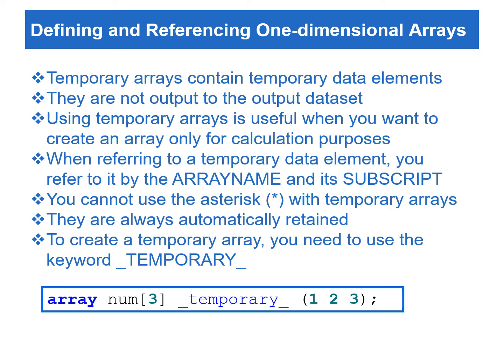We can use the keyword _TEMPORARY_ as array elements to create temporary arrays. Using temporary arrays is useful when you want to create an array only for computing purposes. When referring to a temporary data element, we refer to it by the array name and its dimension. Since the temporary array only contains constants as elements, they cannot be sent as variables to the output data set. Also, the values in temporary arrays are automatically retained without being reset to missing at the beginning of each iteration of the data step execution. Furthermore, we cannot use asterisks with temporary arrays.